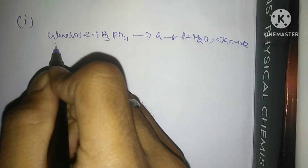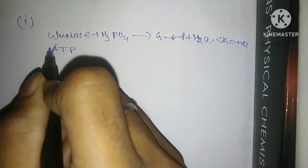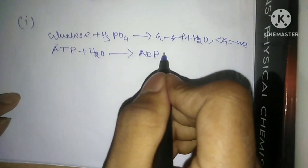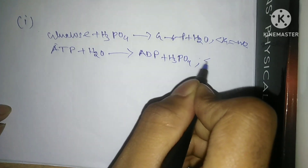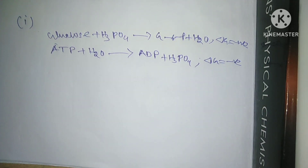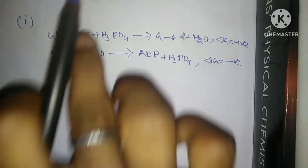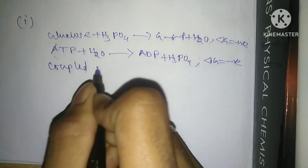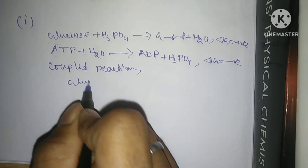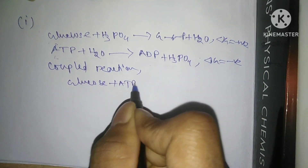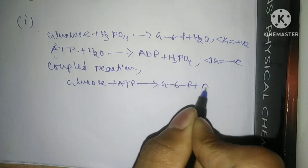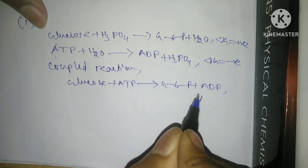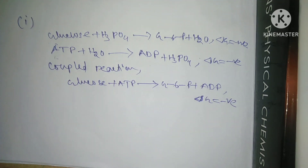Another reaction — ATP converting into ADP plus H3PO4 — is exergonic, and this reaction will force the glucose reaction to proceed spontaneously. The coupled reaction can be written as: Glucose + ATP → G6P + ADP. This overall coupled reaction is exergonic, meaning it is spontaneous.